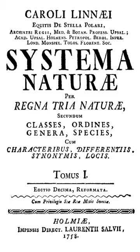The full title of the tenth edition, which was the most important one, was 'Systema naturae per regna tria naturae, secundum classes, ordines, genera, species, cum characteribus, differentiis, synonymis, locis,' or translated: 'System of nature through the three kingdoms of nature, according to classes, orders, genera and species, with characters, differences, synonyms, places.' The tenth edition of this book is considered the starting point of zoological nomenclature.